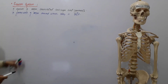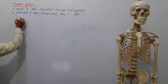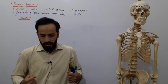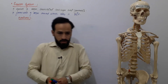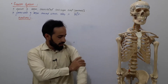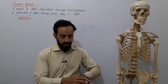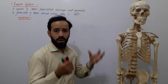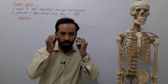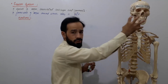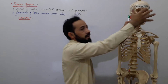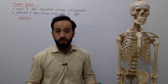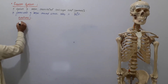Now let's discuss the functions of the skeletal system. The first function is that it gives us a special shape. For example, the hand has this shape because of the bones present — about 28 bones in the hand alone. The face and the head have their particular shapes because the bones are arranged in that manner. So the skeletal system provides shape to the body.